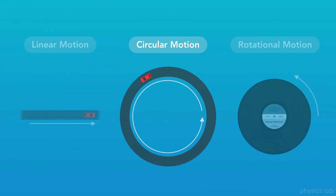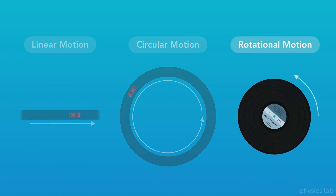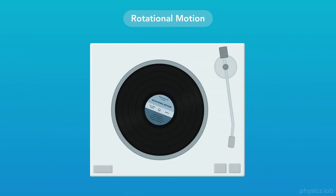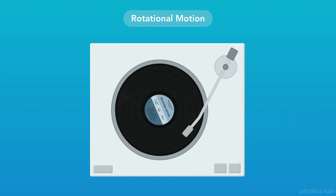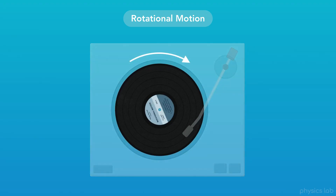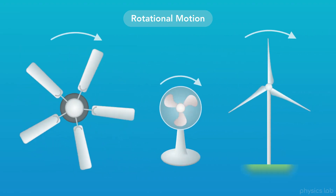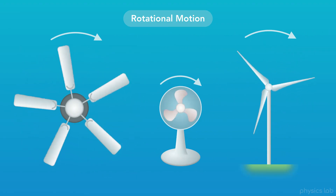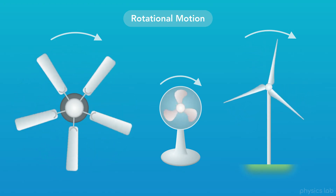In a previous video, we learned about circular motion, where an object travels along a circular path. In this video, we'll learn about rotational motion. This vinyl record is one example. When we say rotational motion, we're not looking at how an object is translating left, right, up, or down — we're only looking at how it's rotating, or spinning. Other examples include fans and wind turbines that have blades which all rotate together.